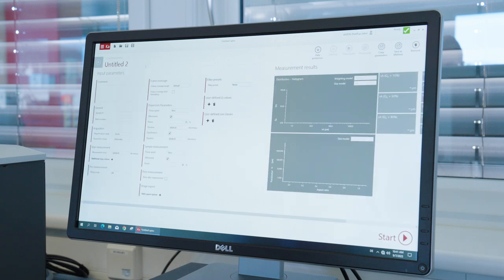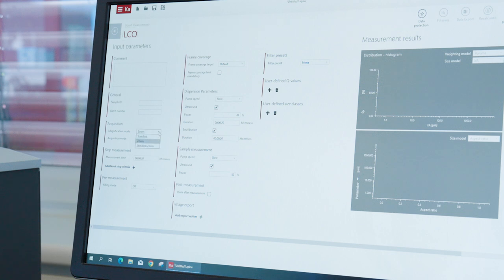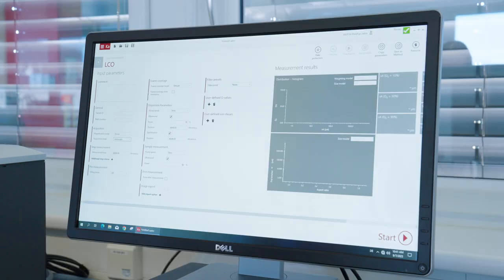For data acquisition, depending on the particle size distribution of the electrode material, a magnification mode is selected among zoom, standard, or both. Additionally, the automatic stop analysis criteria can be selected. This can be based on measurement time, number of particles, or number of images collected.